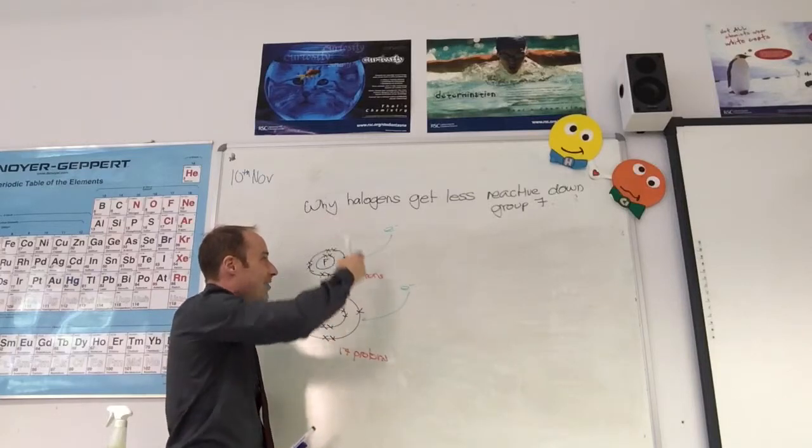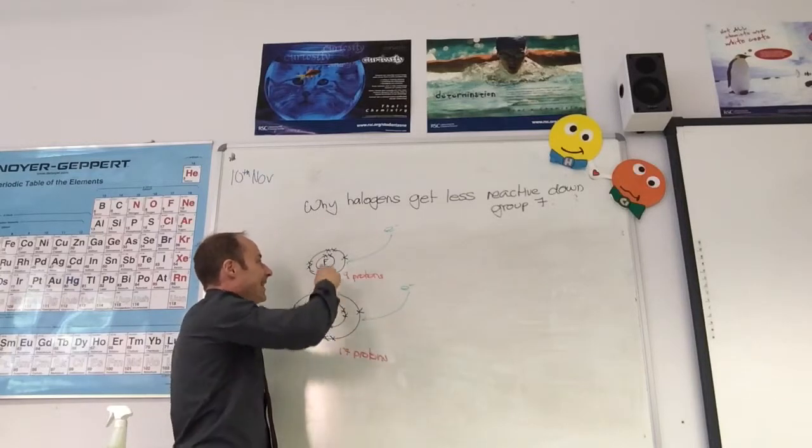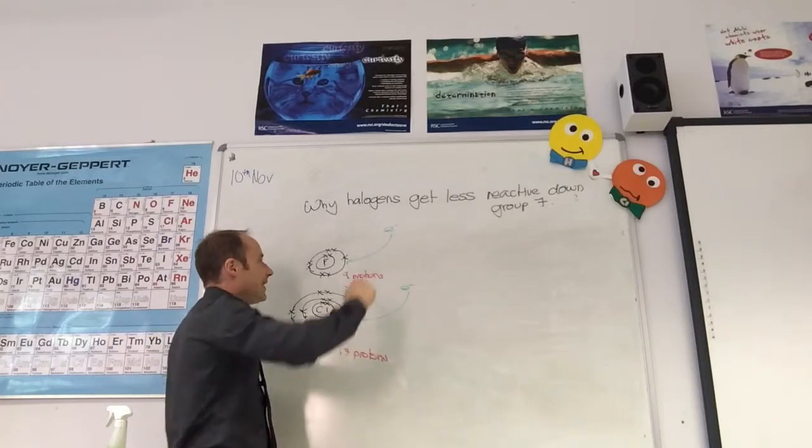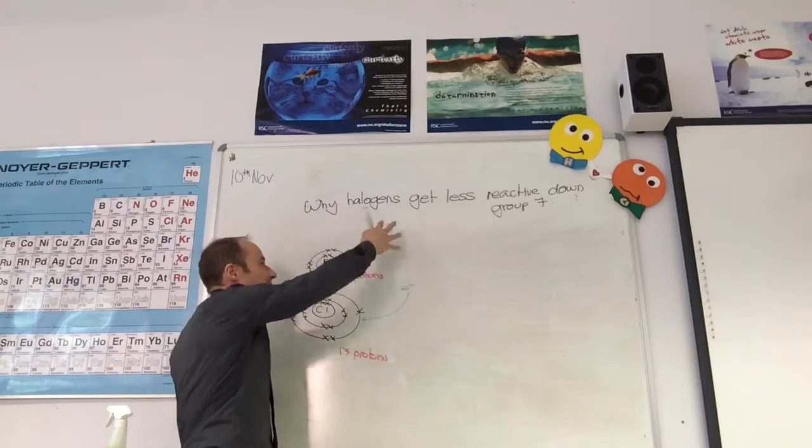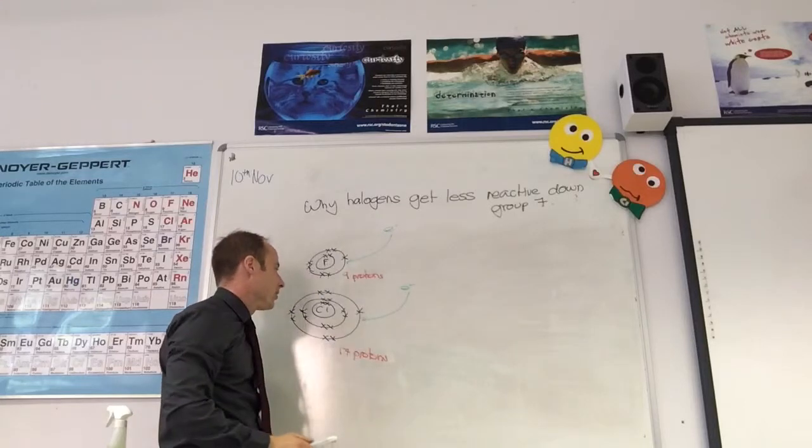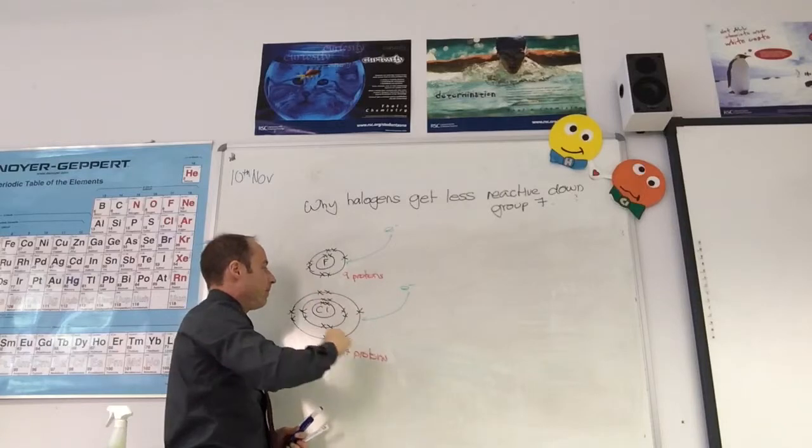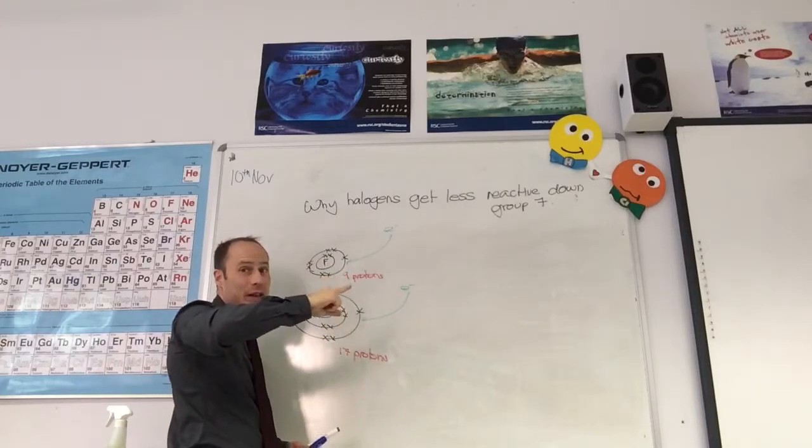If reactivity is decreasing down the group, it's easier for fluorine to do that than chlorine. Why do you think it's easier for fluorine to capture this electron than chlorine? Because there's fewer shells, so the attraction is stronger. Fewer shells for fluorine, so less shielding.